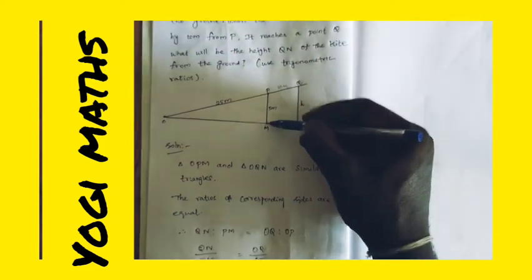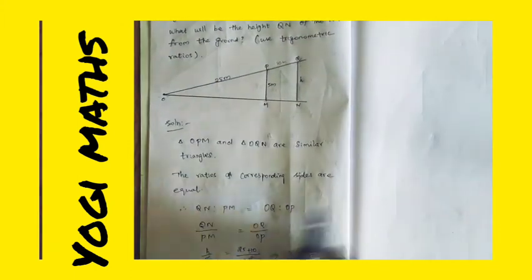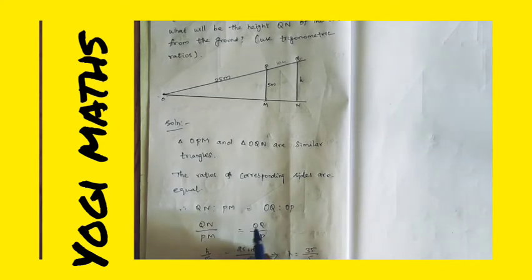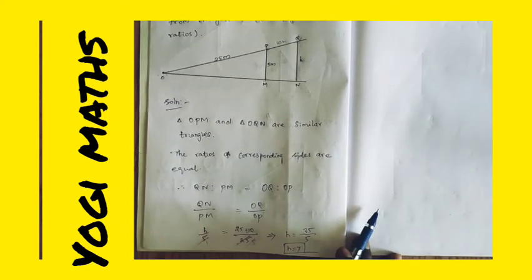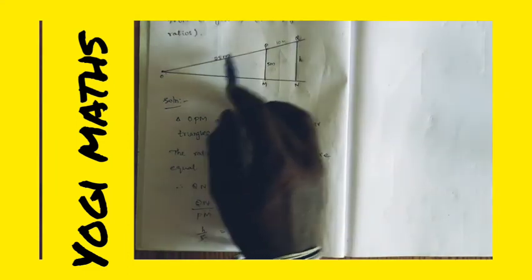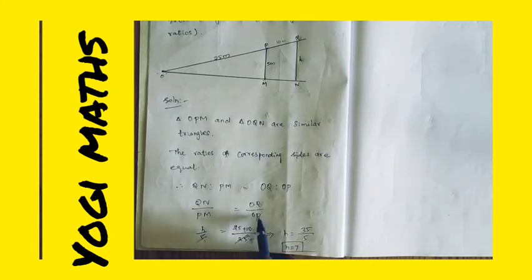The value of QN is equal to OQN divided by OP. Then the ratio, QN divided by OQ equals PM divided by OP. OQ is 25 plus 10, so the corresponding value is 25 plus 10 divided by 25.